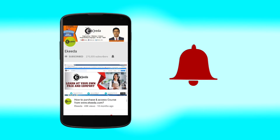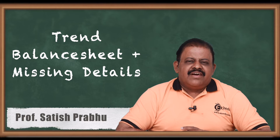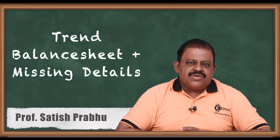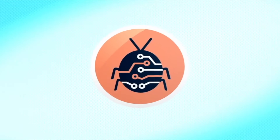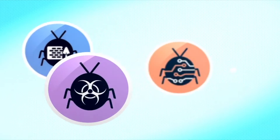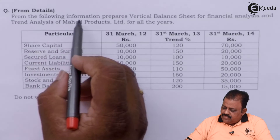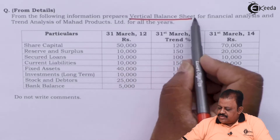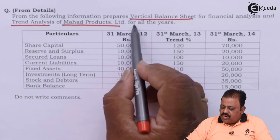Hello friends, we are required to prepare a trend balance sheet where some details are not given in the question. In such cases, how to complete the missing information and prepare the statement is what we will be understanding now. Let us go through the question: from the following information, prepare a vertical balance sheet for financial analysis and trend analysis of Mahar Products Limited for all three years.